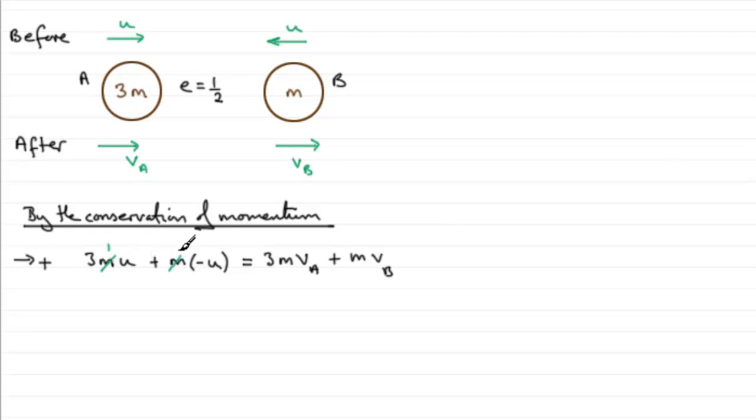We could cancel through by m because it's in every term. Now if we just tidy this up, we've got 3u minus another u, so that's 2u, and it equals 3VA plus VB. I'm going to put that on hold, just leave it as it is there.